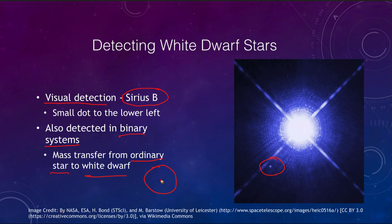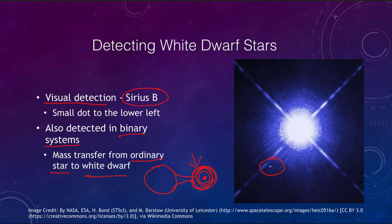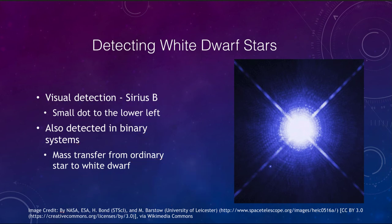In binary star systems, in some cases we can actually transfer matter from the ordinary star to the white dwarf. You can have one ordinary star and one compact white dwarf — if they are close enough together, material can be transferred into a disk around the white dwarf and slowly spiral in. This accretion disk will actually give off energy. We can detect the white dwarf even if we cannot see it directly — we can detect its influences gravitationally as the star moves, or detect emissions from the accretion disk around the white dwarf.